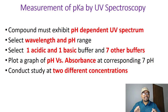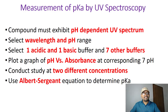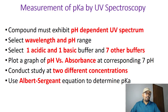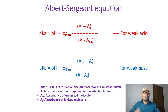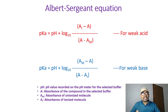It is always recommended to conduct the study at two different concentrations, for example 10 ppm and 50 ppm. Use the Albert-Sergeant equation to determine the pKa. For a weak acid, the pKa equals pH plus log base 10 of (Ai minus A) divided by (A minus Am).